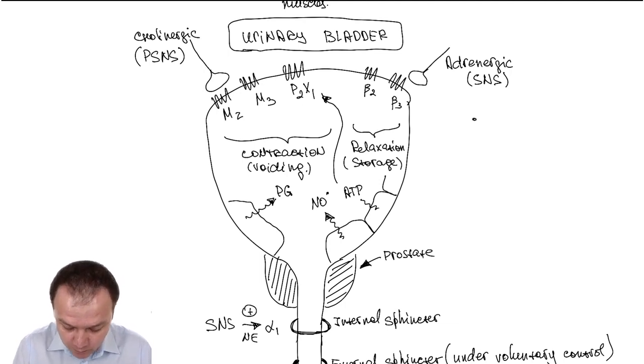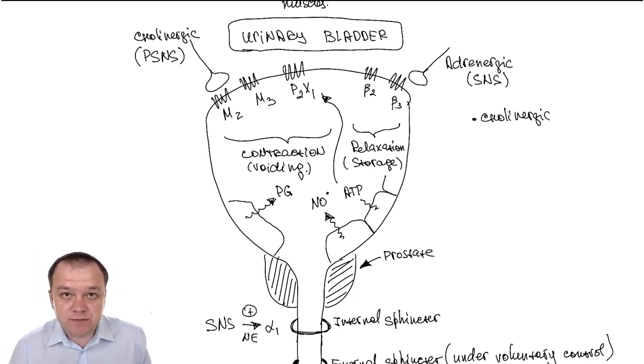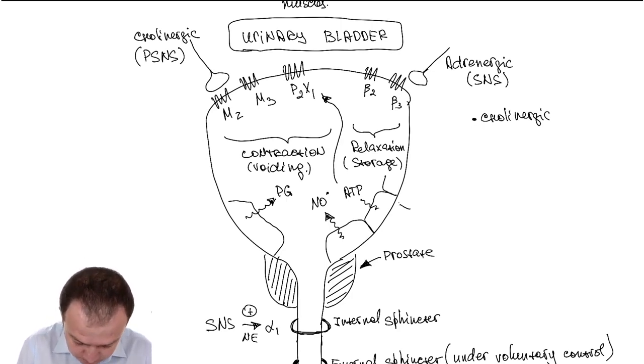First, we have cholinergic system, parasympathetic nervous system, and parasympathetic nervous system responsible for voiding, responsible for urination. Activation of parasympathetic nervous system causes contraction of musculoskeletal detrusor urine and responsible for voiding.